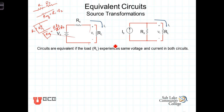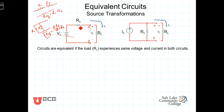What do we mean by equivalent here? Equivalent means that from the terminal pair A to B on each circuit, something connected at these terminals will experience the same current-voltage effects. In other words, a load resistance R_L would have the same voltage across it and the same current through it whether connected to the series voltage source and resistance or connected to the current source and source resistance in parallel. This is what we refer to as source transformations.